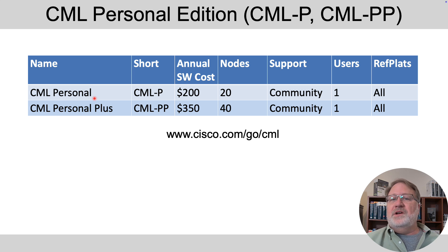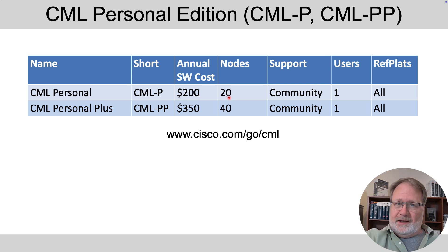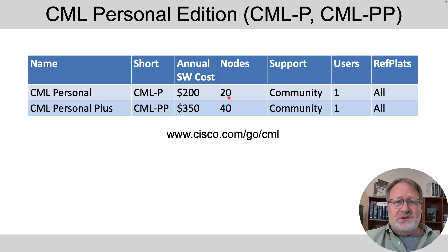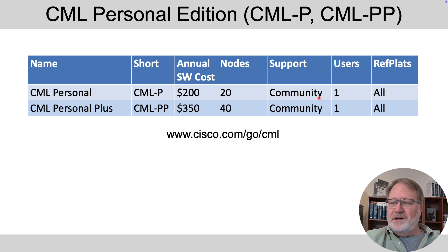For that $200 per year, you can run 20 nodes concurrently. Some nodes don't count against that total, but most Cisco operating systems for routers and switches count as one. So you could run far more than you need for CCNA study with this base CML Personal Edition license. It's meant for one user, and if you want support, you post a message on a community board at the Learning Network and somebody will reply and get you an answer.